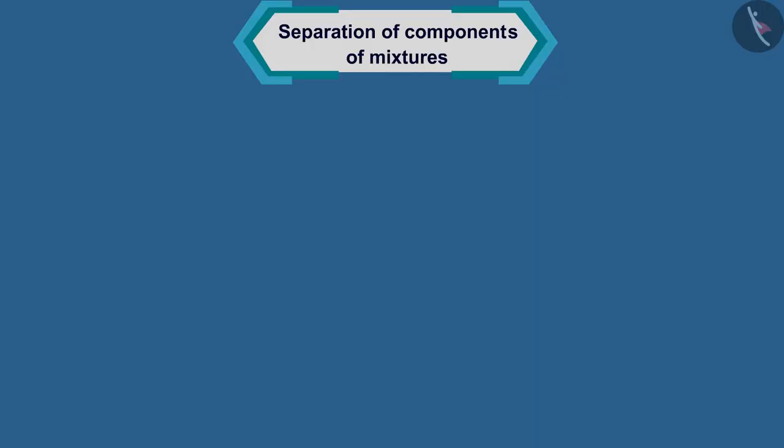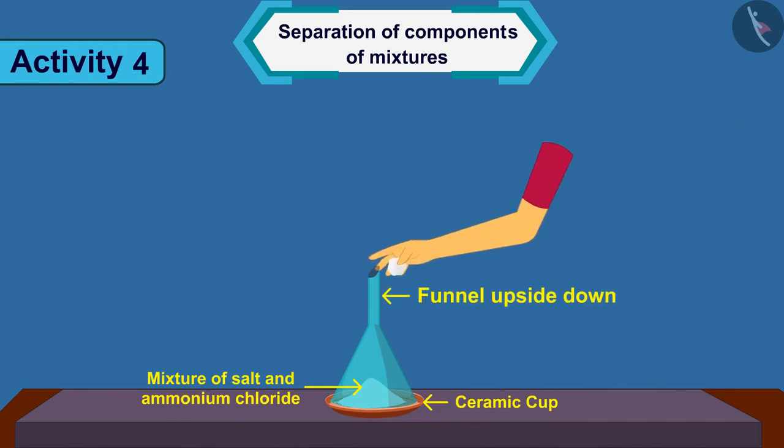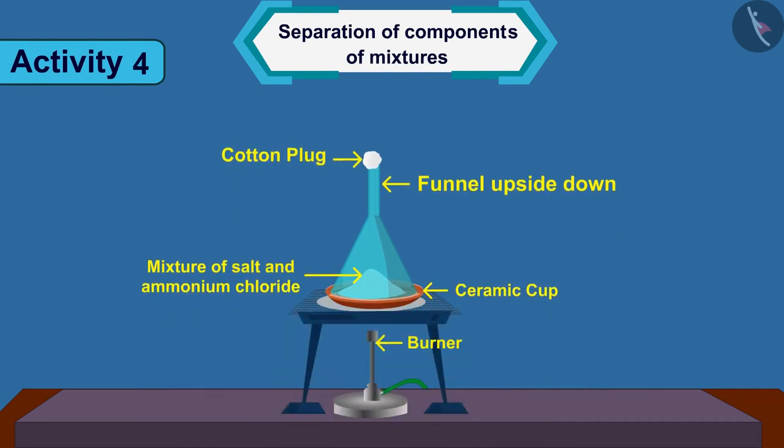Sublimation. Take a mixture of salt and ammonium chloride in a ceramic cup. Now, cover this cup with a funnel upside down and close the open end of the funnel with cotton. Now, heat the ceramic cup slowly using a burner.